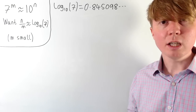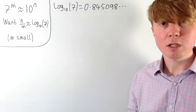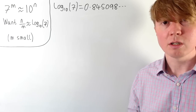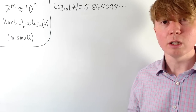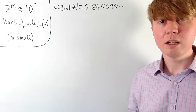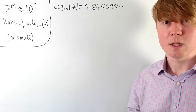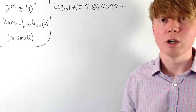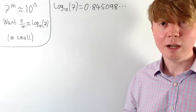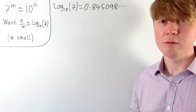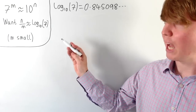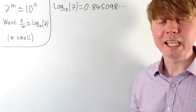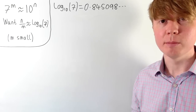Instead, we're going to take a slightly more sophisticated approach using continued fractions. It's actually possible to show that continued fractions give us, in a sense, the best possible fractional approximation for our number: if we have a fraction n over m from a continued fraction, it's not possible to get a better approximation without making m, the denominator, bigger.